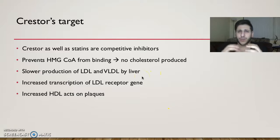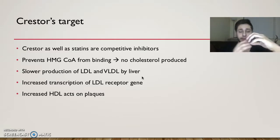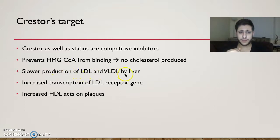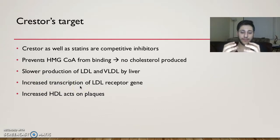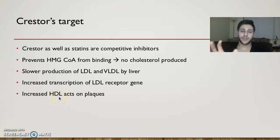Crestor, as well as other statins, targets the HMG-CoA reductase enzyme. They are called HMG-CoA reductase inhibitors because they are competitive inhibitors that compete with the natural substrate, HMG-CoA. Once they bind to the enzyme, they prevent any natural substrate from binding and therefore no cholesterol is produced. This causes a slower production of LDL and VLDL by the liver. The liver will also increase the transcription of the LDL receptor gene, because the liver wants to capture as many LDL and VLDL molecules as possible to maintain cholesterol homeostasis. As a result, we get increased HDL — high-density lipoprotein.